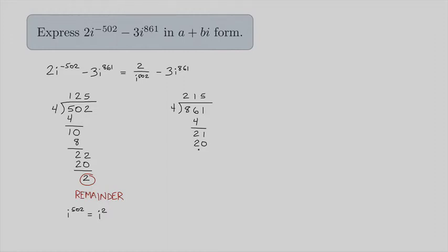4 goes into 21 five times, that gives me 20, 21 minus 20 is 1. And this is my remainder.